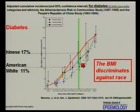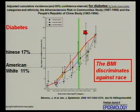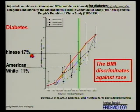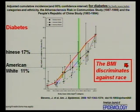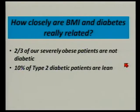And if you look at diabetes, it's not quite as bad, but look at Chinese at the very same BMI — the Chinese counterparts have a 17% rate of diabetes, and Americans 11%. And you just heard the big data on the Indian population. So the BMI also discriminates against race.